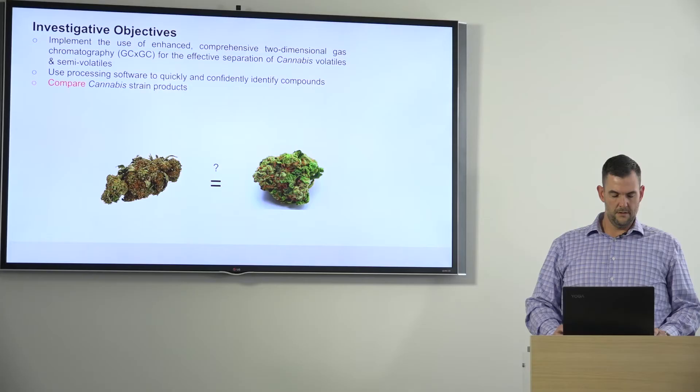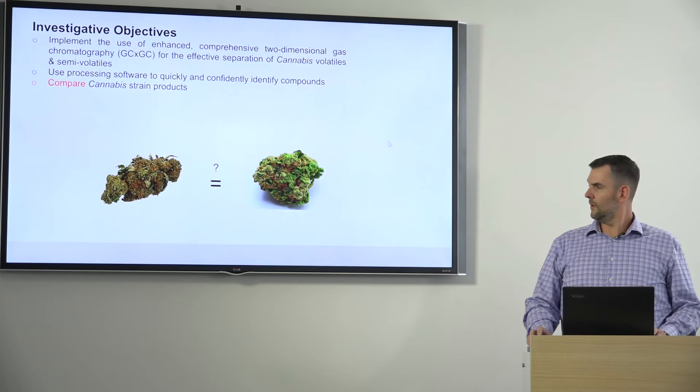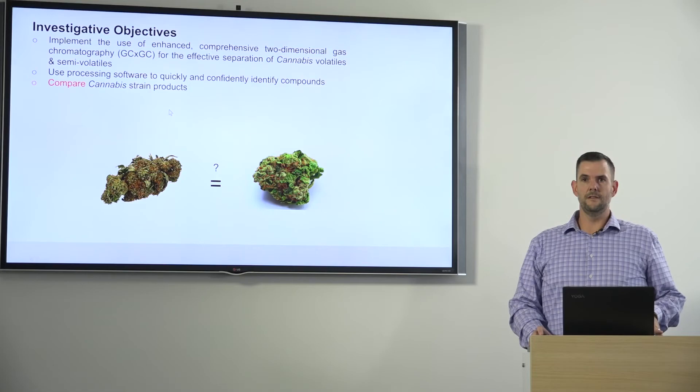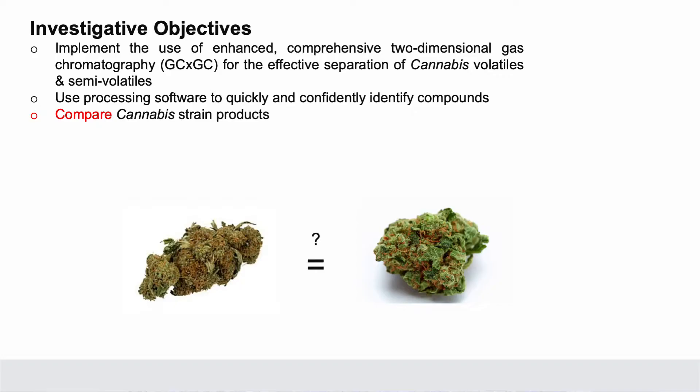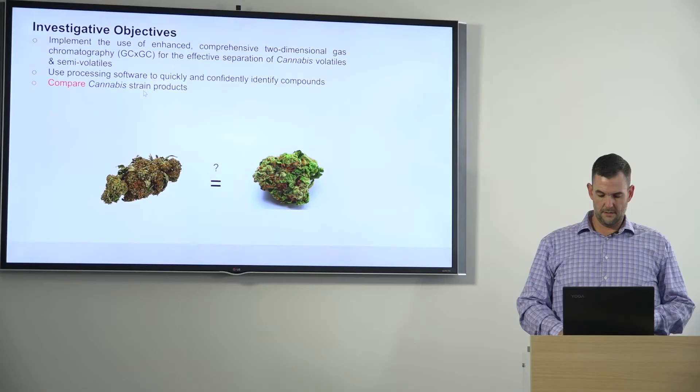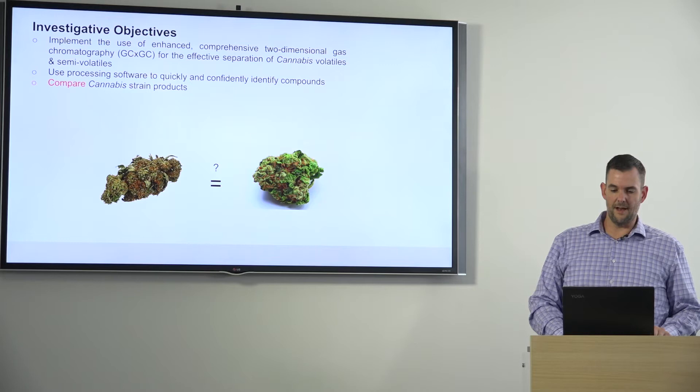So what we're really trying to accomplish in this study is to implement GCxGC to differentiate the chemical composition of cannabis — to determine differences in different plant types and different cannabis products. Then we're going to use processing software to quickly and confidently identify the compounds that make up these differences, and then compare the cannabis strains based on this chemical map.